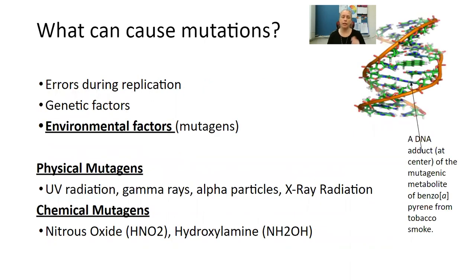So what can cause mutations? Errors during replication — we talked about in DNA and protein synthesis how DNA replicates, how DNA polymerase checks for those mistakes. But it's happening so quickly, errors do occur. Then we have genetic factors, so mutations can be passed on. And then we have environmental factors, which are known as mutagens — things you might be exposed to that can cause cancer to occur.